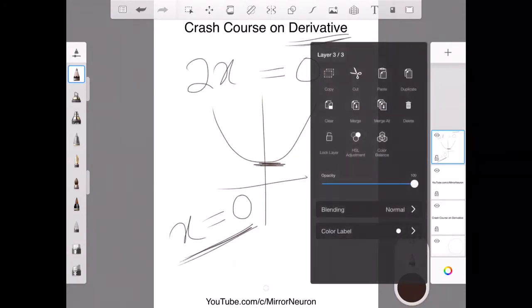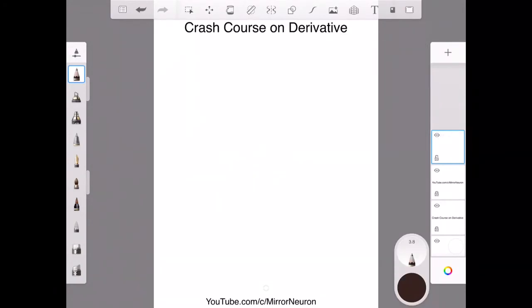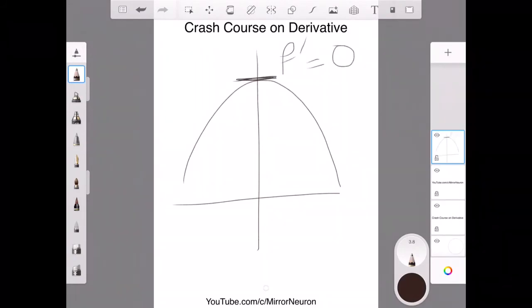Now, the same thing can also be applied to maximizing any function. So, that means my graph could have also looked something like this and here also the derivative is equal to 0 and same way I can find the maximum point for that function as well. So, derivative helps in finding the minimum and the maximum and depending on the context, we can utilize that. This is a very powerful concept which we are going to repeatedly use in our machine learning algorithm.